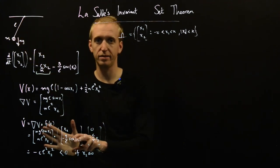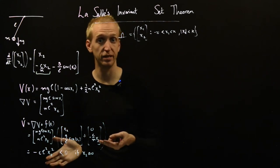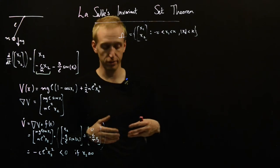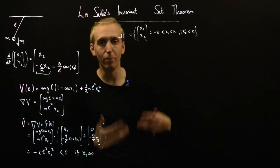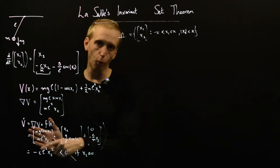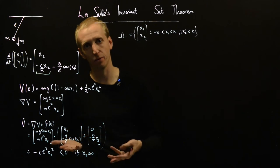Yet, our Lyapunov analysis isn't quite strong enough to prove asymptotic stability. And what LaSalle's Invariant Set Theorem lets us do is sort of just stumble over the line and prove asymptotic stability in systems that almost satisfy the asymptotic stability requirement, but not quite.